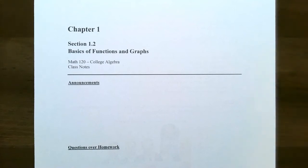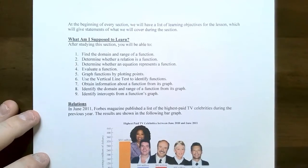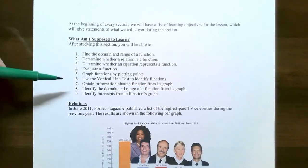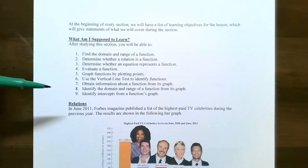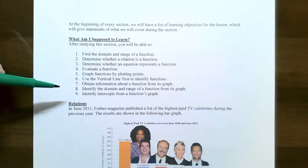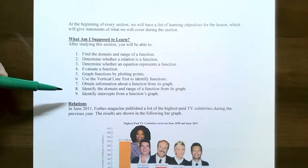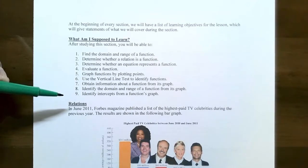Hi everyone, it's Professor Pemberton. In this video we're going to finish up our discussion on the basics of functions and graphs. From the previous video, we left off at graphing functions by plotting points, using the vertical line test to identify whether a graph is a function, obtaining information from a graph of a function, and in particular identifying the domain and range of a graph, and also the intercepts of a function's graph.